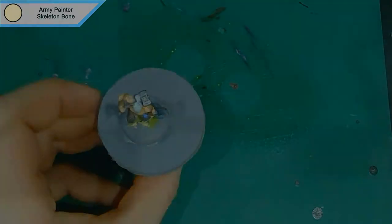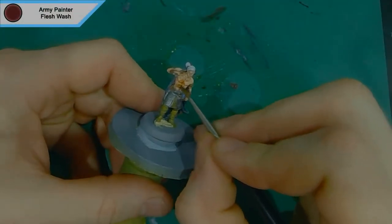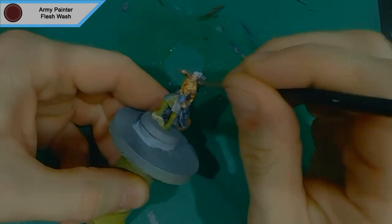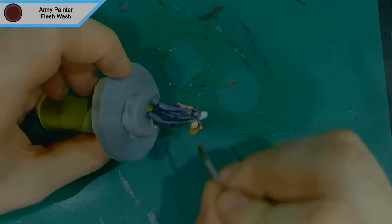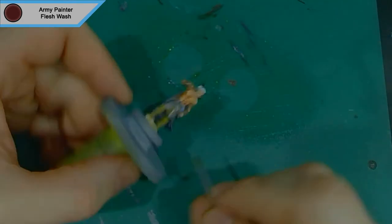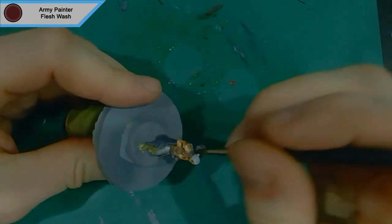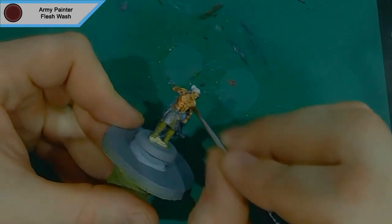Now we move on to the washes, which is essentially the finishing part of this model. It's flesh wash for all the flesh, obviously. It's the only wash that really works well because it's a nice reddish brown, so it still looks like flesh, but it's dark enough that it actually highlights with low lights.